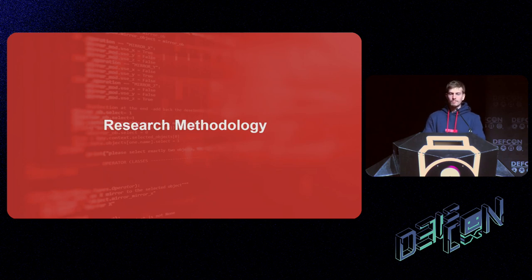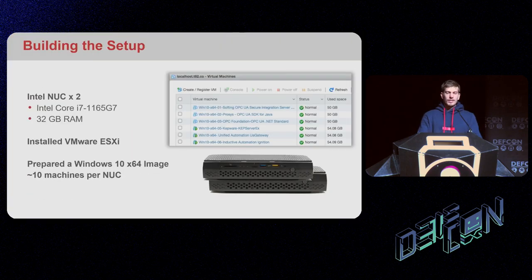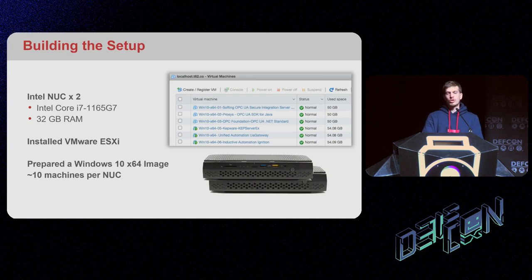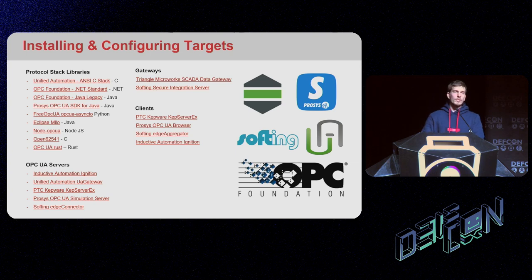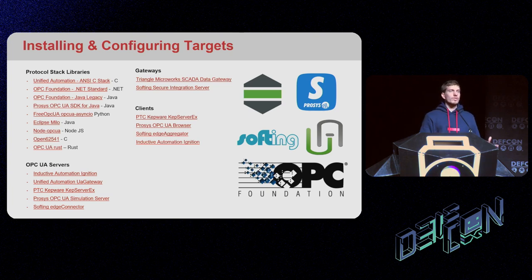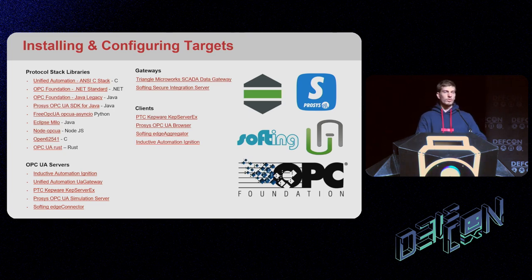Now let's talk about our research. We researched OPC UA for a very long time and when we started, we needed a plan. We started by buying two Intel NUCs, installed VMware ESXi on those, and installed many products from different categories — OPC UA servers, OPC UA clients, OPC UA protocol gateways, and different protocol stacks and SDKs. We needed a lot of virtual machines to install all these products so we could research their binaries or review the code.